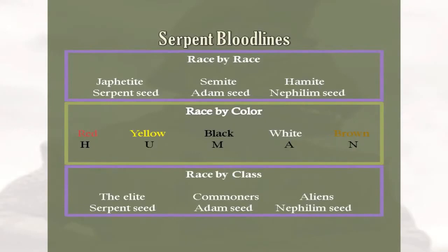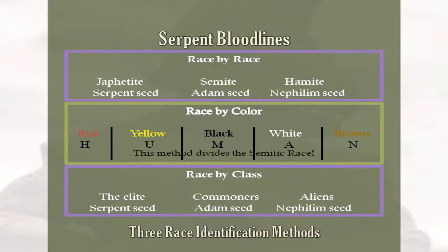The top example demonstrates the race-by-race method. Wikipedia says this is the oldest method used by people, using three generalized groups derived from Noah's sons: the Japhethite, the Semite, and the Hamite. The center method is race identification by color, which was not used until about the 18th century. It only divides a very exaggerated range of Semitic colors and none of the five colors adequately describes any race, since race colors vary through even wider ranges like greens, blues, and grays.